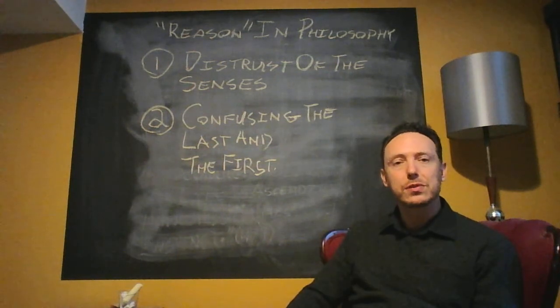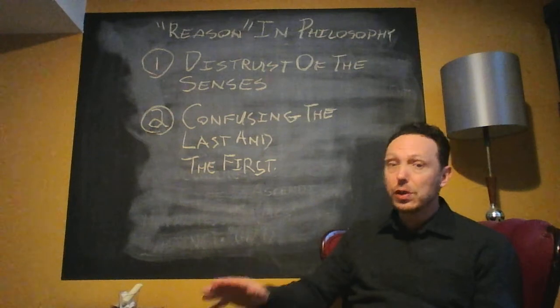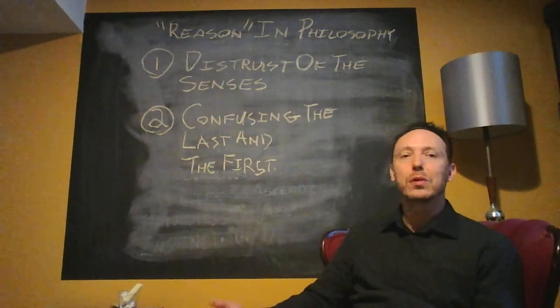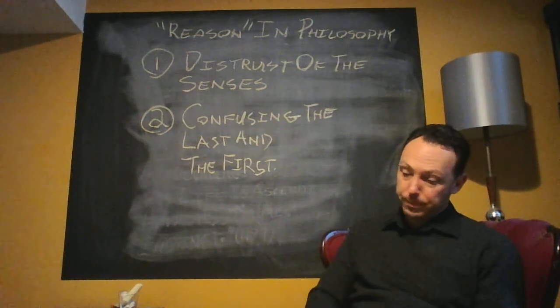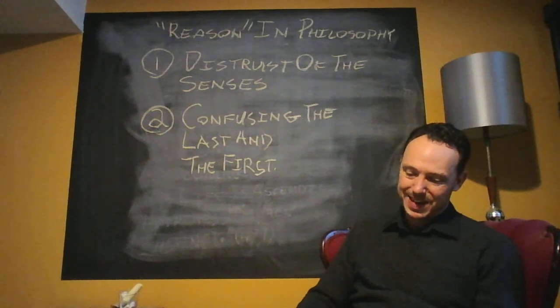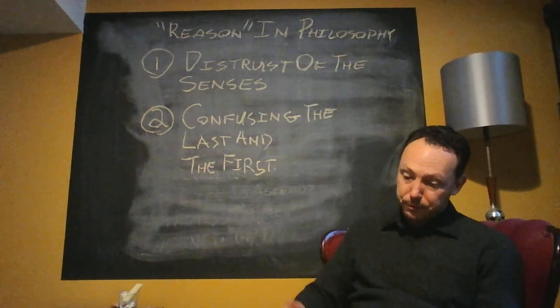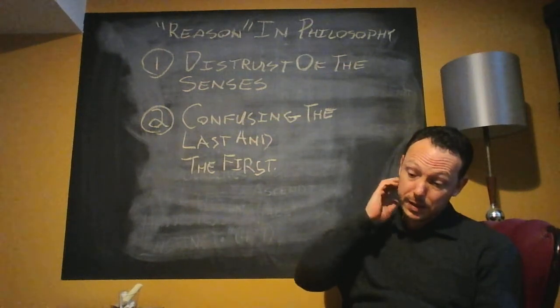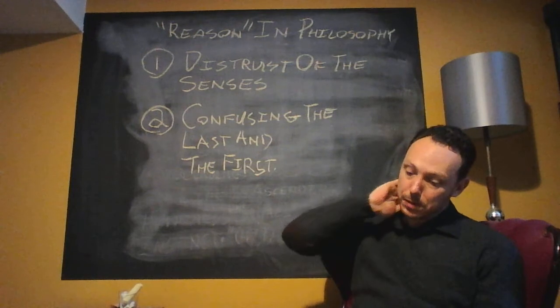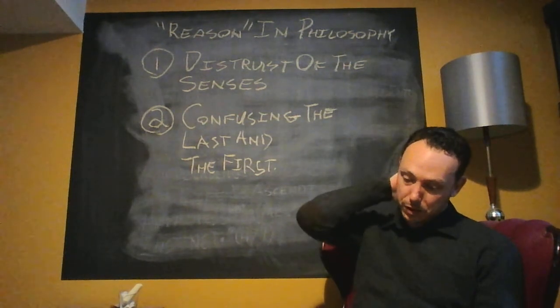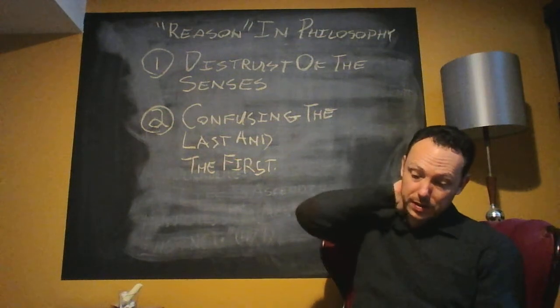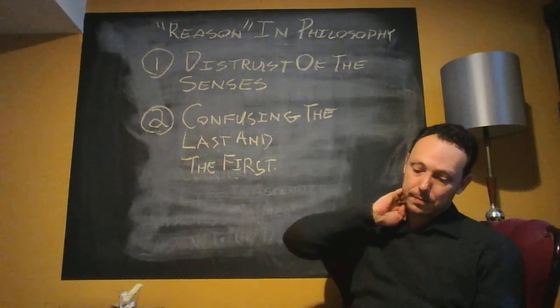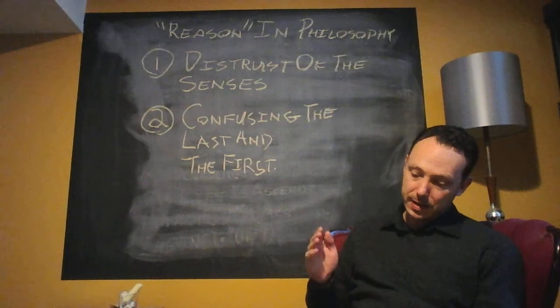Think about all of our physical and observational sciences, those sciences that have been so productive, that have given us our technology, that have fostered our understanding of the natural world. He's got this beautiful passage, I quite like it, about the nose here. This nose, for example, which no philosopher has yet spoken with reverence and gratitude, is actually the most delicate instrument so far at our disposal. It's able to detect minimal differences in motion which even the spectroscope cannot detect.